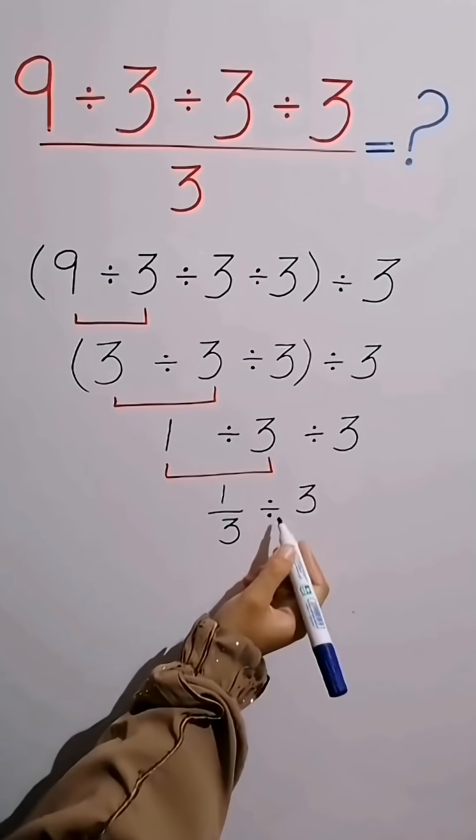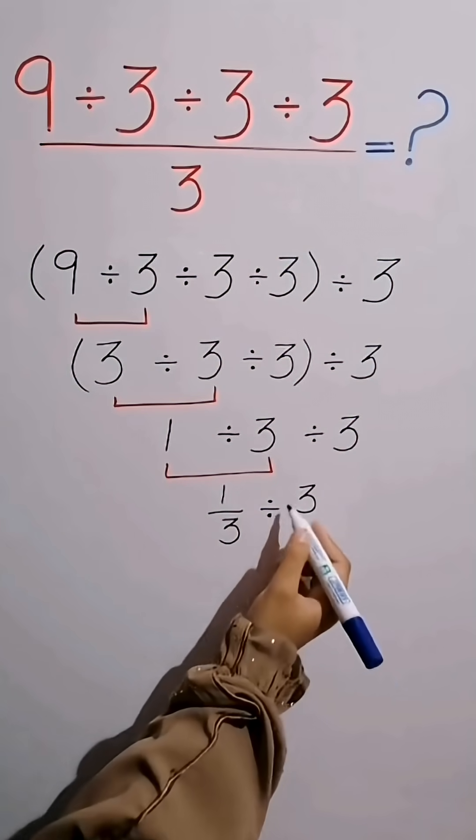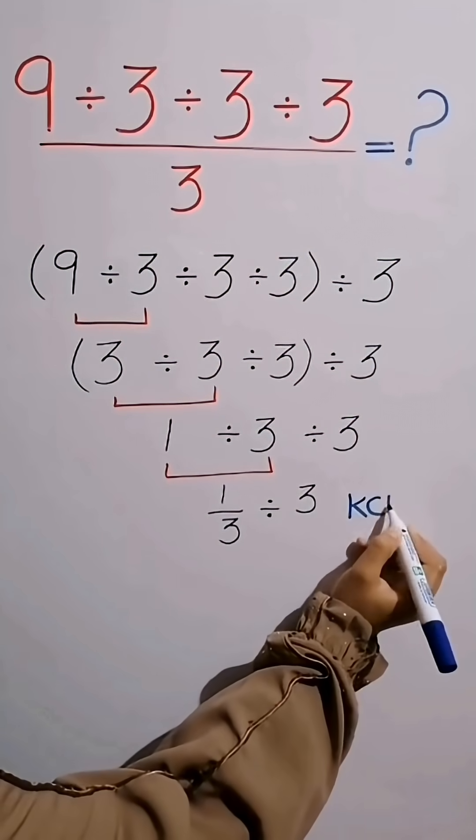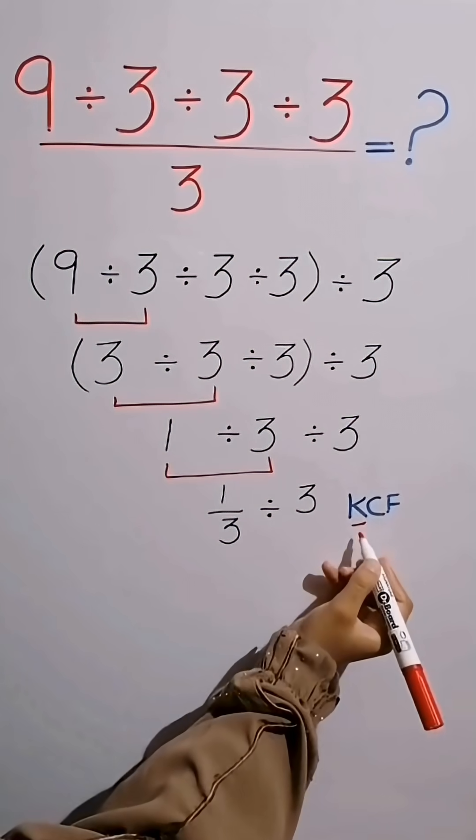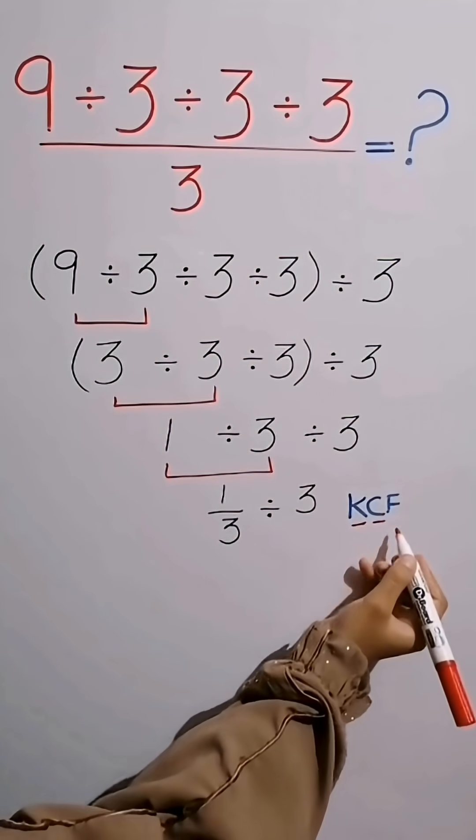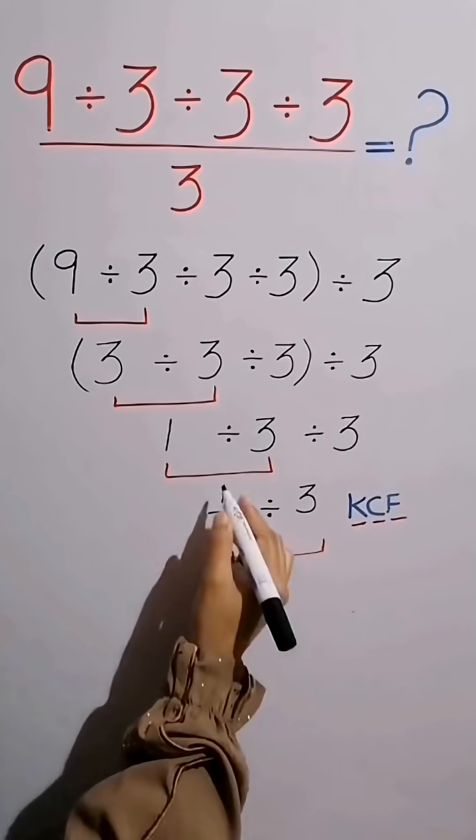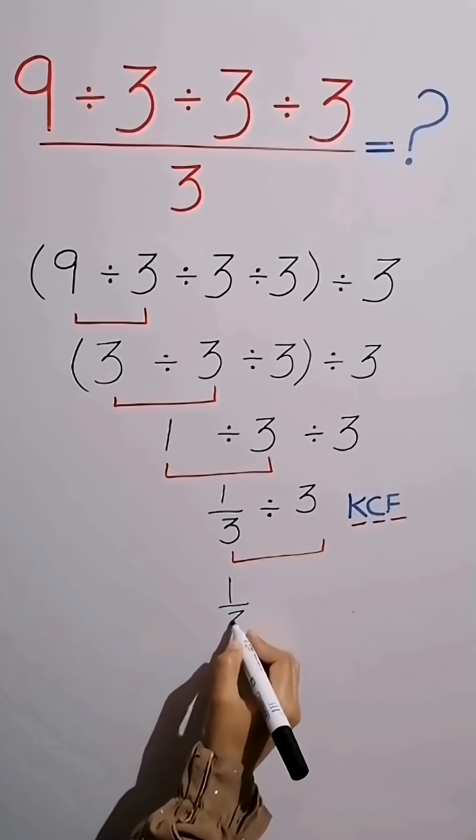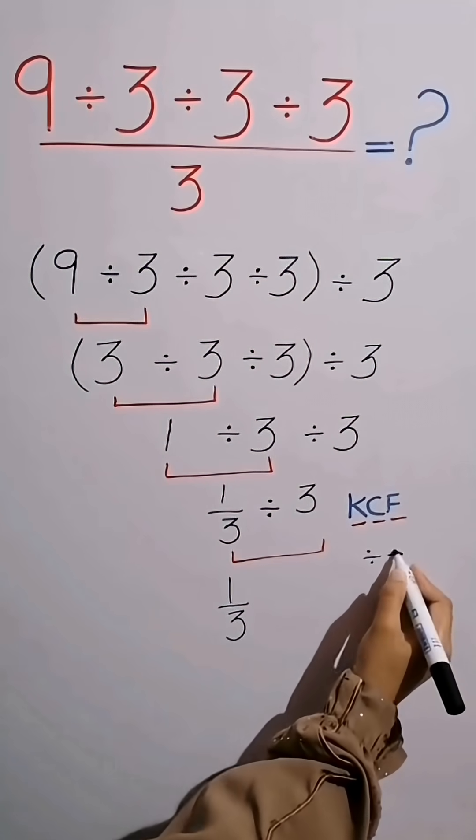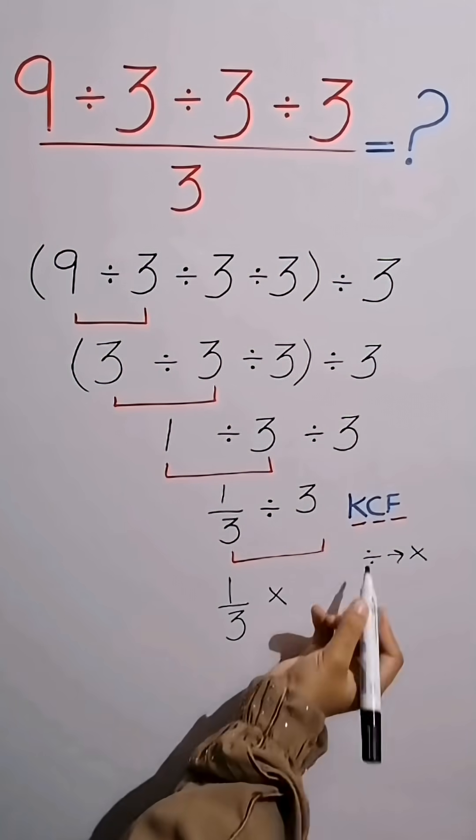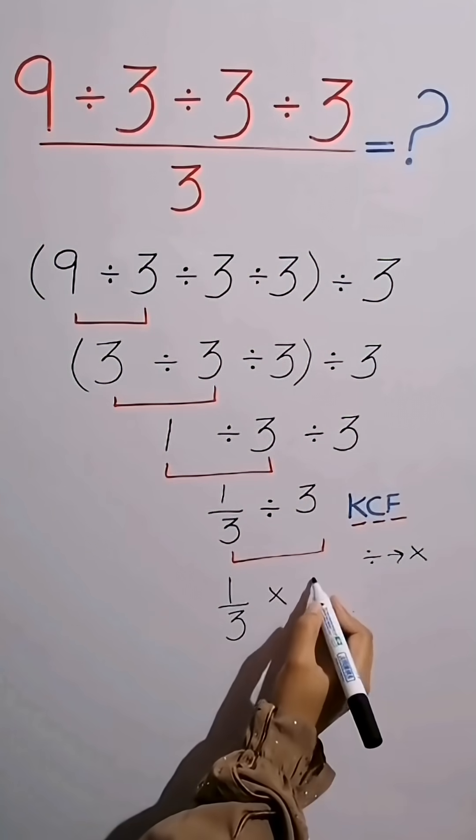Whenever we see a division sign between two terms, the best thing to do is to apply the KCF rule. K stands for keep, C stands for change, F stands for flip. Now according to KCF rule, keep the first fraction as it is, change division into multiplication, and flip the second fraction. 3 becomes 1 over 3.